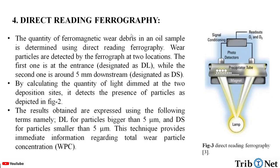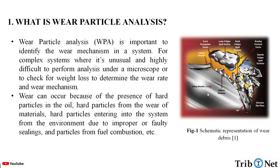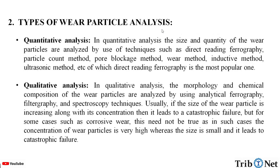In direct reading ferrography, the quantity of the ferromagnetic wear debris in an oil sample is determined. Particles are detected by the ferrograph at two locations: the first one is at the entrance, designated as DL, while the second one is around five millimeters downstream, designated as DS. By calculating the quantity of light dimmed at the two deposition sites, it detects the presence of the particles, as depicted in this figure. The measurements obtained are expressed using the following terms: DL for particles bigger than 5 micrometers and DS for particles smaller than 5 micrometers. This technique provides immediate information regarding the total wear particle concentration, called WPC.